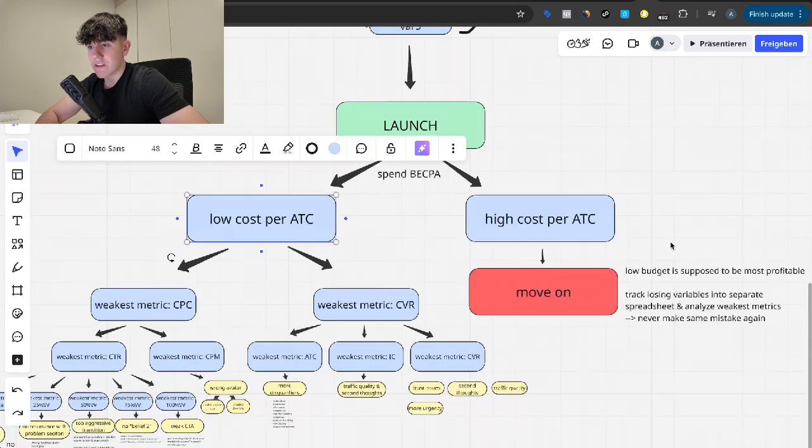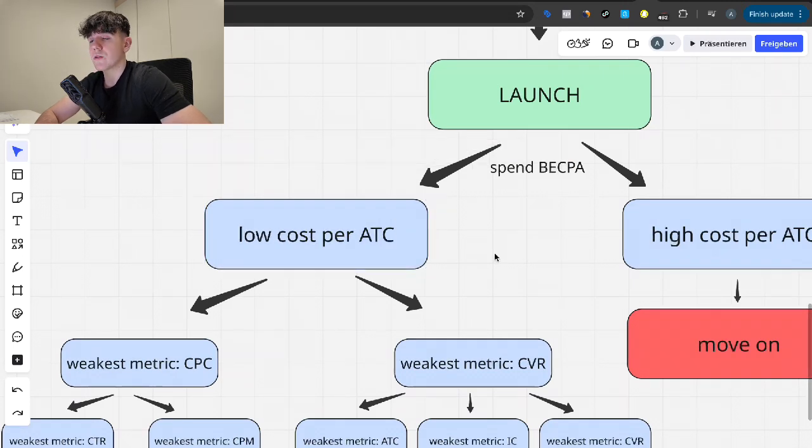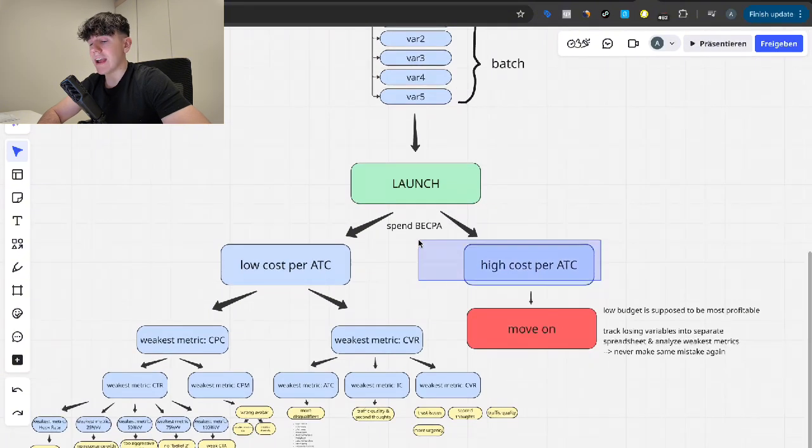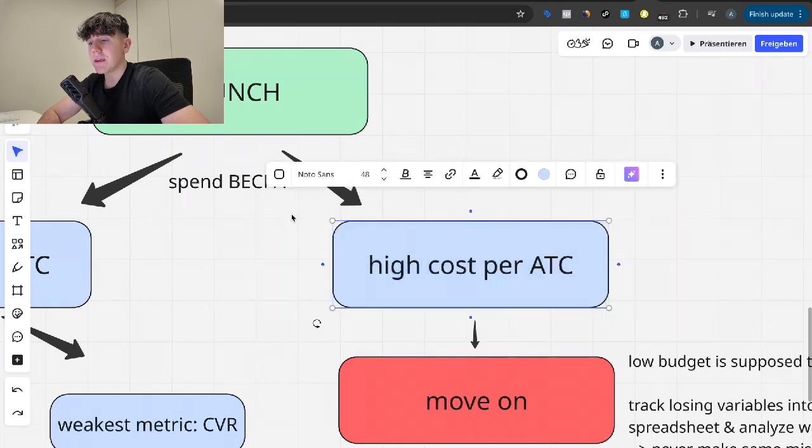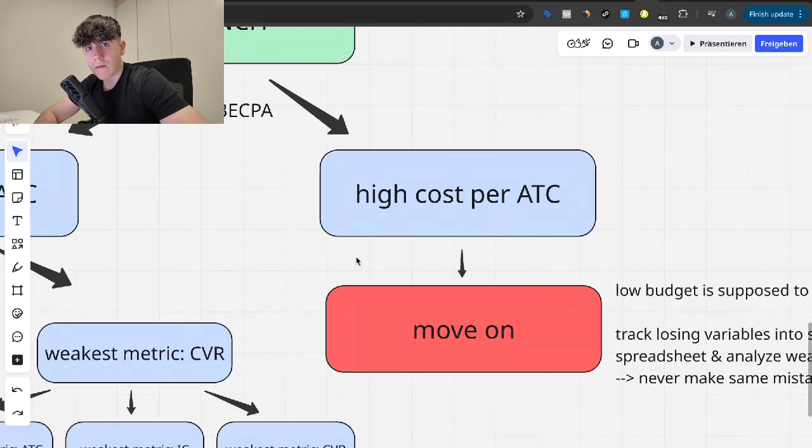And then you're going to look at this metric here, which is the cost per add to cart, my personal favorite metric. It actually tells you a lot more than just the ROAS. It actually predicts the ROAS very early on, how it's going to be, and how much spend it also is going to be able to hold. But also, it oftentimes even predicts the LTV, which is super crazy. So the cost per add to cart currently, honestly, my favorite metric, and you can just directly implement this into your ad account, look at it immediately.